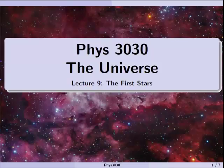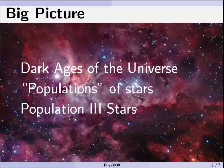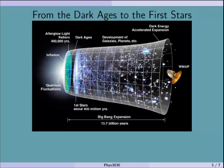All right, Physics 3030, the Universe. This is Lecture 9. In this lecture, we're going to start talking about the stars, and specifically the first set of stars. We start with the Dark Ages of the Universe, then we'll talk about the classification of stars, which is populations of stars, and then specifically population 3 stars, which really describe the first generation of stars.